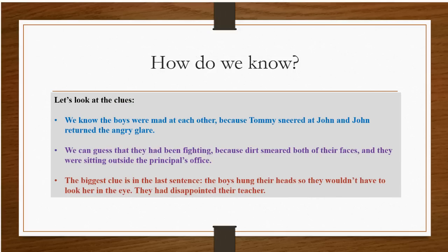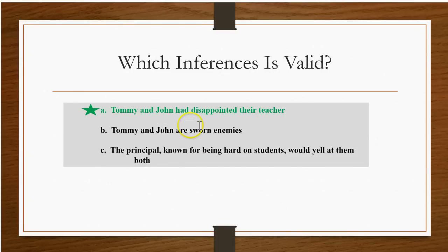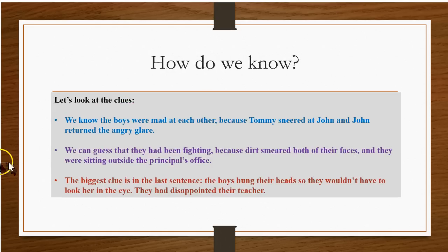Let's take a look at why. The boys were mad at each other because Tommy sneered at John and John returned the angry glare. We can guess they'd been fighting because of the dirt smeared on their faces and they were sitting outside the principal's office. But the biggest clue is in the last sentence: the boys hung their heads so they wouldn't have to look her in the eye — they had a disappointed teacher. We don't really know about them being sworn enemies; we don't have evidence of that. We know they had a fight, but maybe they were friends yesterday. And we don't really know anything about the principal from the passage. So the best answer is A.